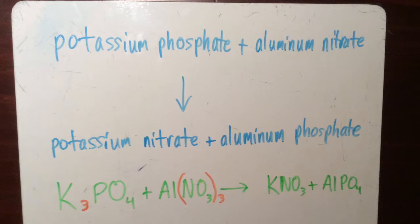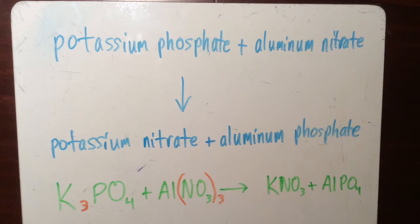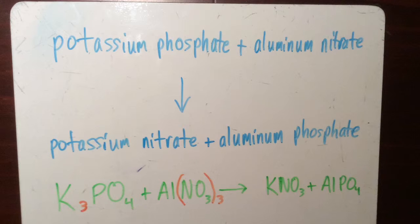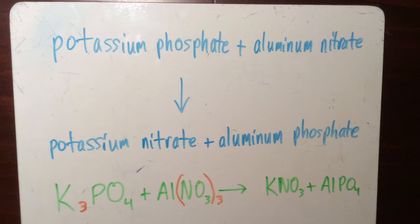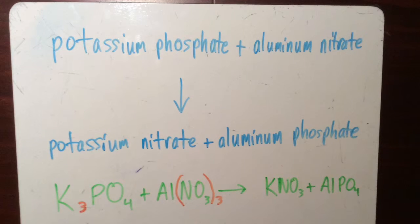To balance that molecule we need to have 3 potassiums so that we'll have a positive 3 and a negative 3. So the molecule is balanced.